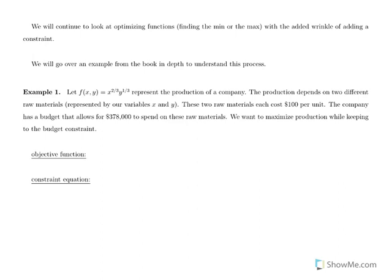The company has a budget that allows $378,000 to be spent on these raw materials. We don't have infinite money — we have a certain amount allocated. They each cost $100 per unit, and we want to maximize production while keeping to this budget constraint. We want to see how much of X and how much of Y to buy to maximize production. We're going to talk about two kinds of functions: the objective function and the constraint equation.